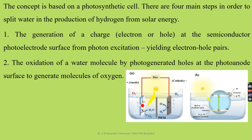The setup of the photoelectrocatalytic cell consists of a photoanode, a photocathode, and a membrane. When sunlight falls on the photoanode, the electrons present in the photoanode are excited to a higher energy level, generating electron-hole pairs. The concept is based on the photosynthetic cell. The first step is the generation of positive charges (holes) and negative charges (electrons) at the semiconductor photoanode surface from photoexcitation.